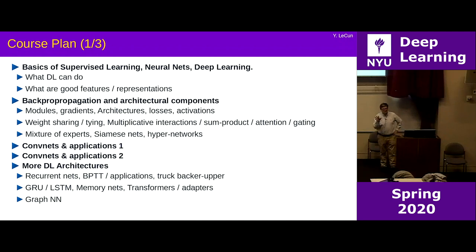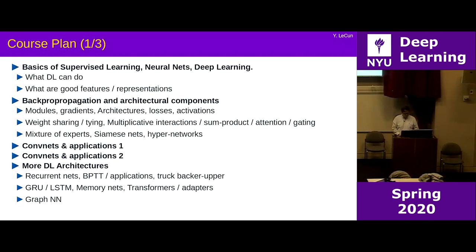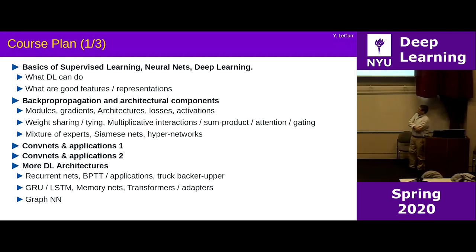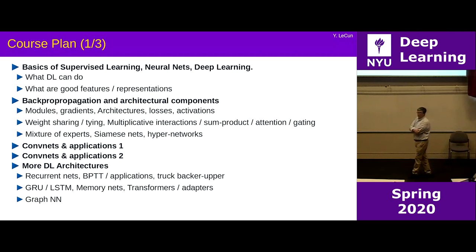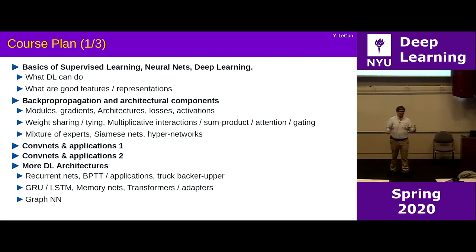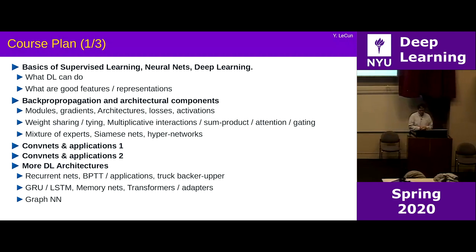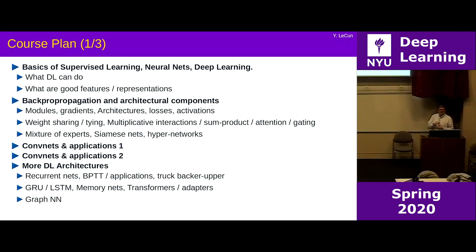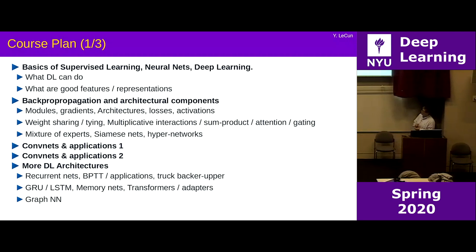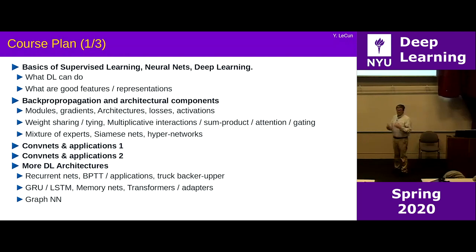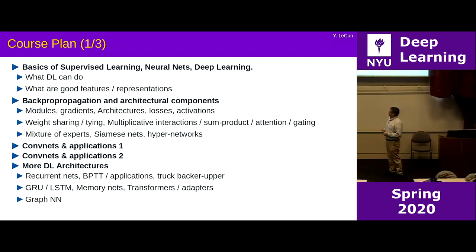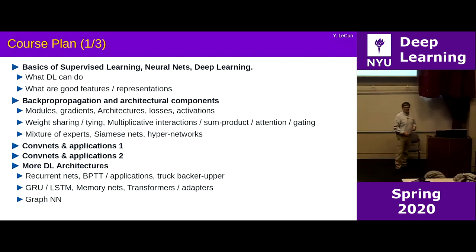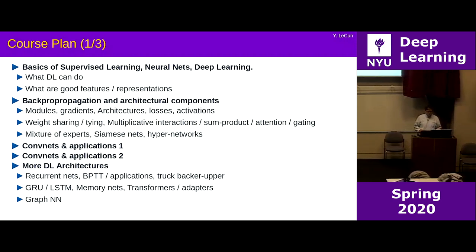There will be one or two lectures on convolutional nets and their applications, one of which might be a guest lecture. Then more specifically, deep learning architectures useful in special cases: recurrent neural nets with backpropagation through time, applications to control and predicting time series, gated recurrent units and LSTMs, and then things that use multiplicative interactions as a basis — memory networks, transformers, adapters — which are very recent architectures that have become extremely popular in NLP and other areas.